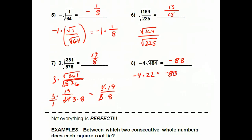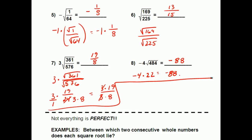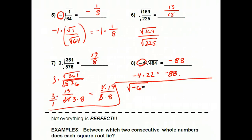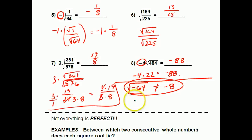One thing that we can never do — notice how the negatives on this page were all on the outside of the root sign, and that's okay; I'm just multiplying a constant by whatever is under the root sign. But one thing we can't do yet is take the square root of a negative number. The square root of negative 64 does not equal negative 8 — this is a big-time no-no. When we see a negative under the root sign, for now we can't do this. Later on we'll deal with imaginary numbers, but right now we don't have the tools in the toolbox yet.